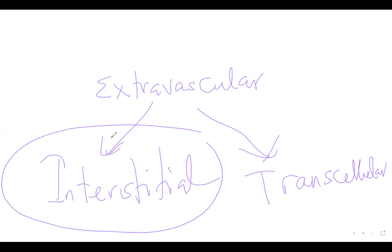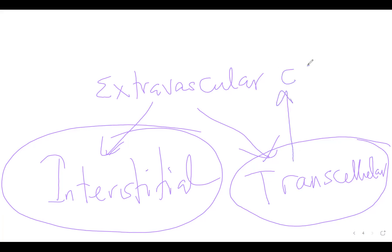The extravascular compartment has both interstitial and transcellular components. Interstitial is fluid collected between cells, while transcellular fluids are collected in cavities not in direct flow continuity with the extravascular compartment — for example, CSF, fluid within joints, and fluid within the eyeball.